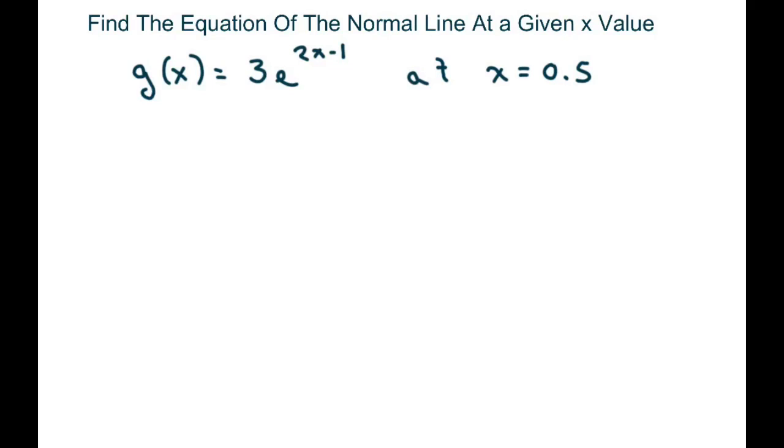The first thing I want to do is find the y-coordinate of the point of tangency by plugging x into the function. So y equals g of 0.5. Just plug that in: 2 times 1/2 minus 1, and this is going to be 3e to the 0. e to the 0 equals 1, so that's going to be 3. So our point is (0.5, 3). That's our y-coordinate.